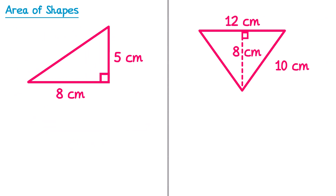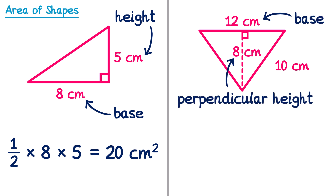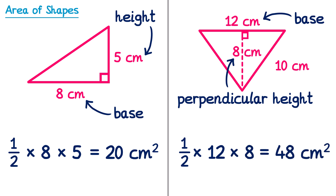Here are two examples of triangles that you might want to try and find the area of. For the first triangle the base is 8 and the height is 5, so we do one half multiplied by 8 multiplied by 5, and you'll get 20cm squared. For the second triangle the base is 12 and the perpendicular height is 8 — we don't need the 10 in this question. So we would do one half multiplied by 12 multiplied by 8, and if you work this out you'll get 48cm squared.